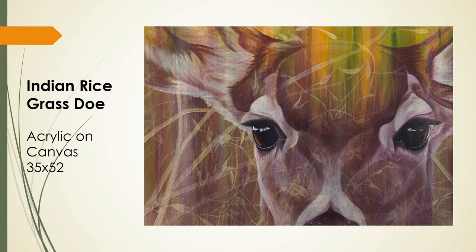This piece is titled Indian Ricegrass Dough. Indian ricegrass grows throughout the open fields in the valley. It is high in protein and essential to the survival of deer, elk, and antelope during the winter season. The horses are destroying it, forcing these animals out of their wintering grounds.